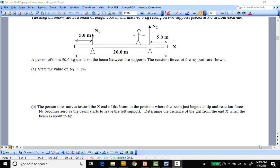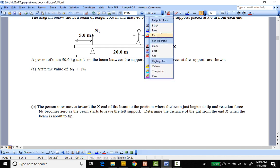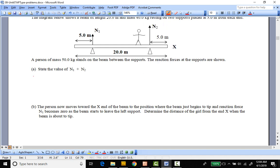We can just do a sum of the forces in the y direction. We have N1 and N2 going up, we have the weight of the dude going down, so the weight of the guy, minus the weight of the actual bar.